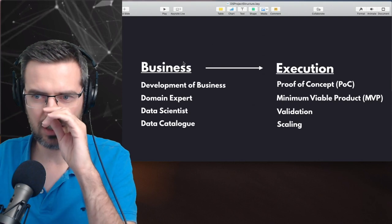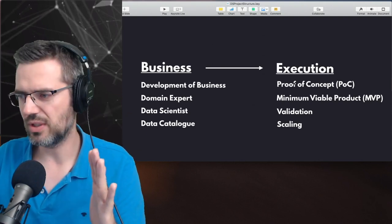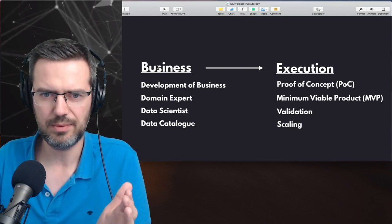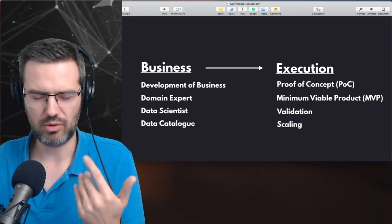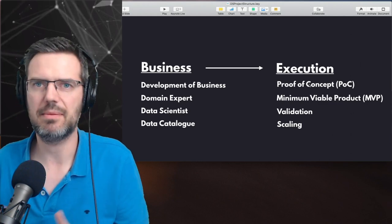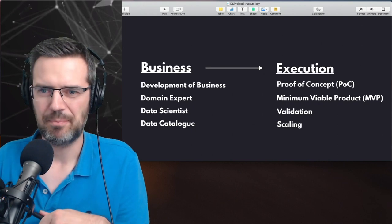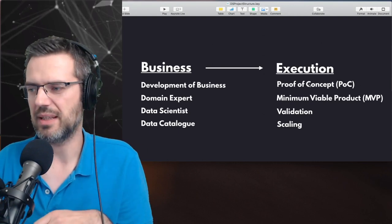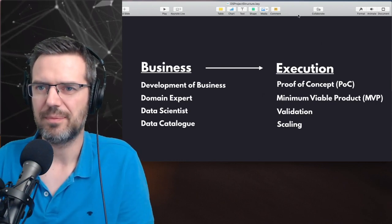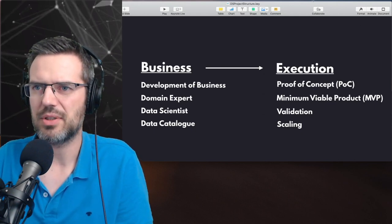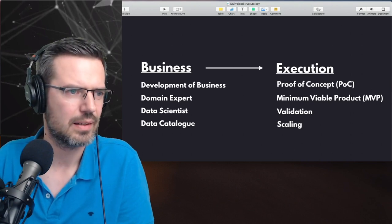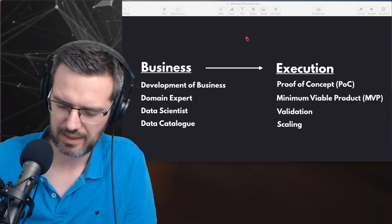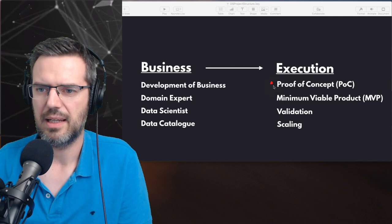Once the business side is okay — once you know what business value you want to deliver and how you can make money with it — then you jump into execution. Once you jump into execution, you go through different phases. The first phase is a proof of concept phase. You have the business set up, and what you're going to do is test it out. Then you move into a minimum viable product phase.